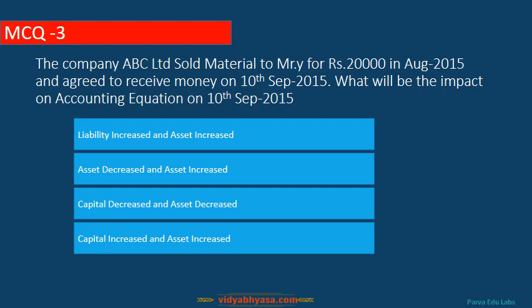MCQ Question 3: Company ABC Limited sold material to Mr. Y for rupees 20,000 in August 2015 and agreed to receive money on 10th September. What will be the impact on the accounting equation on 10th September once money is received? When cash is received, cash (asset) increases. The debtors account, which is also an asset, decreases. So the answer is: asset decreased and asset increased — both changes are within asset accounts.